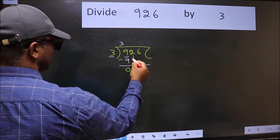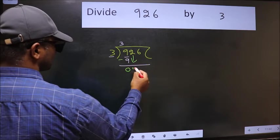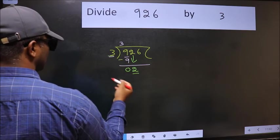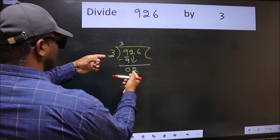After this, bring down the beside number. So 2 down. Now here we have 2 and here 3. 2 is smaller than 3.